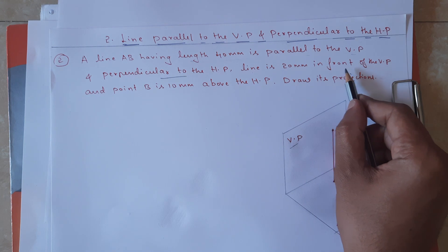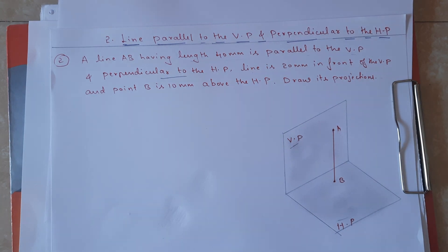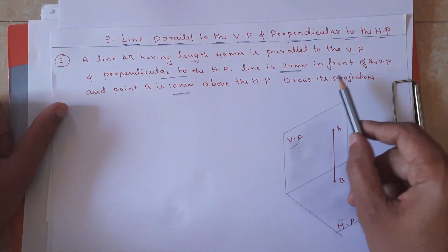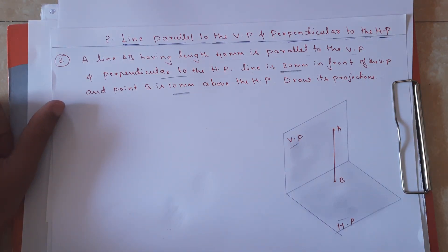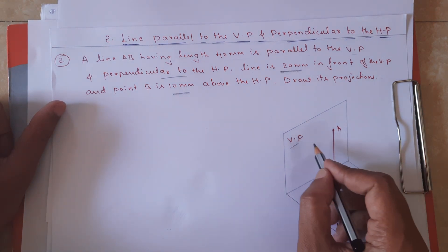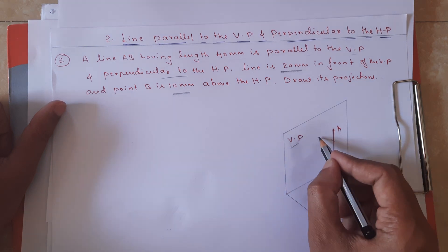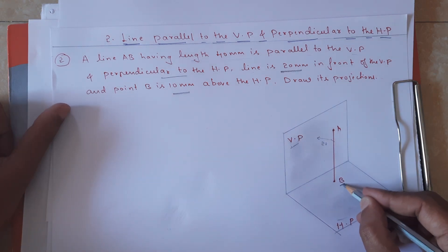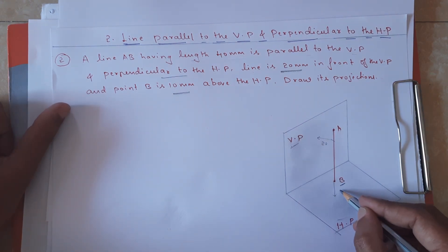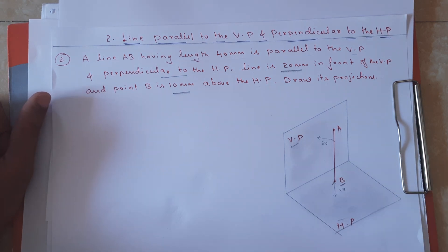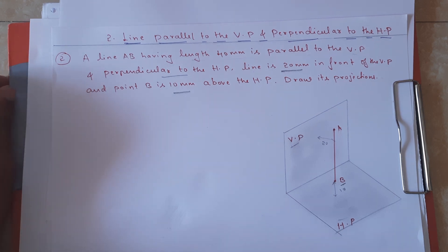The line is 20mm in front of VP and point B is 10mm above HP. Draw its projections. Since the line is parallel to VP, the distance between VP and the line is 20mm, and point B is 10mm above HP. We need to draw the front view as well as the top view.